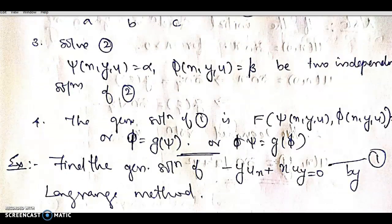The solution will be written as f(ψ(x,y,u), φ(x,y,u)) = 0, which gives the general solution.